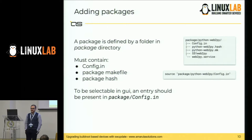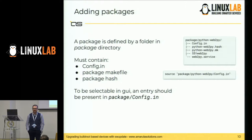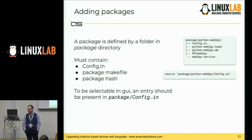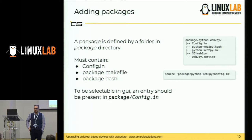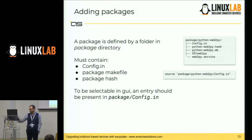Another common task is adding a package, which means instructing Buildroot to cross-compile your package and include it in the final root filesystem. Adding a package requires adding a config.in, a package .mk file, and a package hash file to be usable by the Buildroot build system. You also have to add a package config.in entry to make the package selectable in the UI — so it appears in 'make xconfig'.